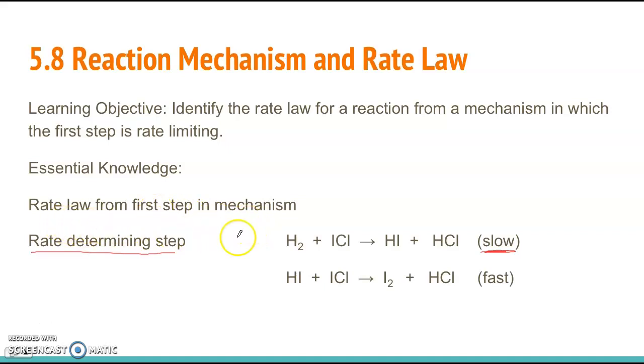And to get the rate law, we just look at the reactants in the slow step, and we just go by the stoichiometry. So you go by the coefficients for each of these reactants. So in this example, the rate law is just going to be rate equals K H2, and that has a coefficient of 1, so it'll be to the first order. And same thing with ICL.